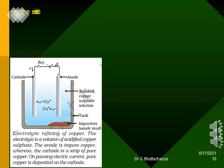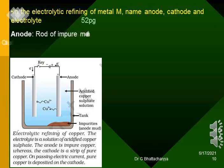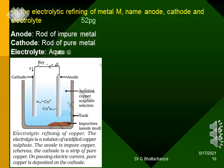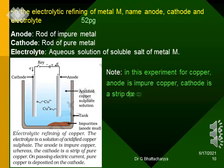In the electrolytic refining of metal M, name the anode, cathode and electrolyte. Anode: rod of impure metal M. Cathode: rod of pure metal. Electrolyte: aqueous solution of a soluble salt of metal M. Note: In this experiment for copper, the anode is impure copper, the cathode is a strip of pure copper, and the electrolyte is a solution of acidified copper sulfate.